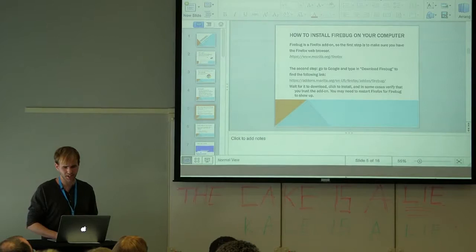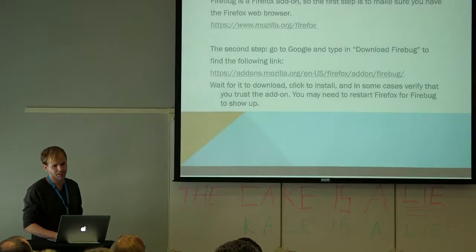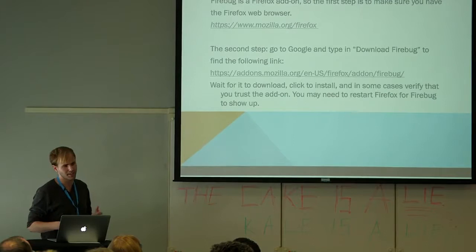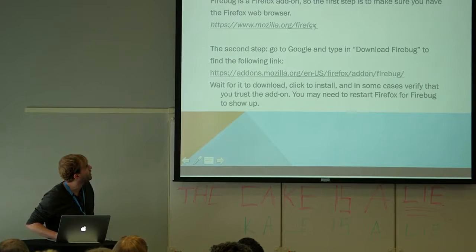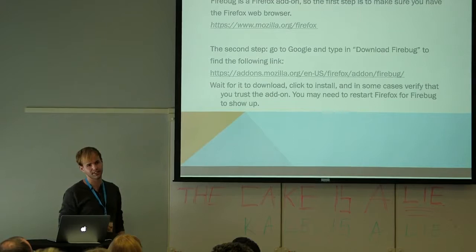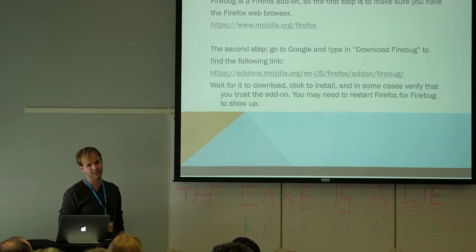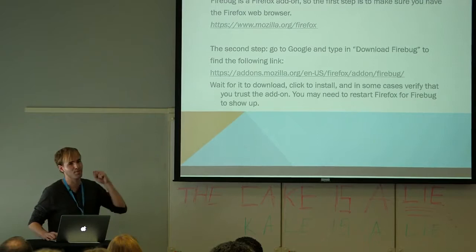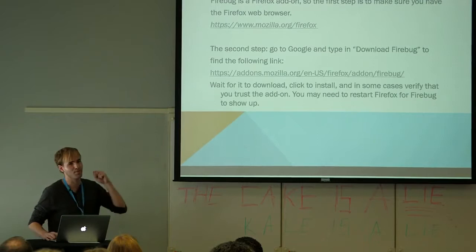How to install Firebug on your computer: it's very easy, so I won't spend too much time. Generally, just Google 'Download Firebug.' First you need Firefox — you can Google 'Download Firefox.' Then go to Google and type in 'Download Firebug,' click the link, and it's very user-friendly. It downloads, asks if you want to install the add-on, you say yes, and sometimes it makes you restart Firefox before it shows up. You can tell you have Firebug by seeing that bug icon in the top right-hand corner.